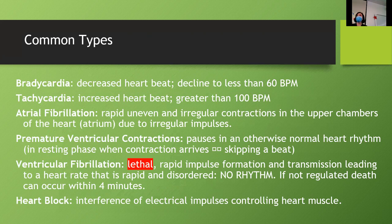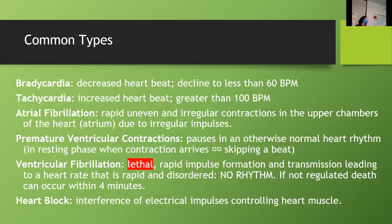The most important variation to be aware of is ventricular fibrillation — that's the most dangerous. The heart isn't really pumping, it's just jiggling, not actually pumping blood. That's when they use the shock to reset it into a rhythm. Atrial fibrillation is irregular but at least there's a rhythm there. Ventricular fibrillation has no rhythm at all. Other terms include bradycardia — decreased heart rate — and tachycardia — increased heart rate. Brady, tachy, atrial, and ventricular are the most important terms. Premature ventricular contractions are pauses in otherwise normal heart rhythm — contractions skipping a beat.